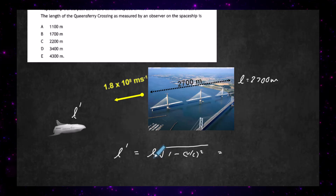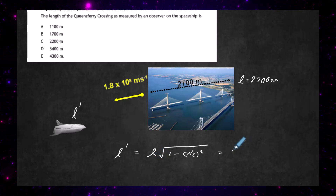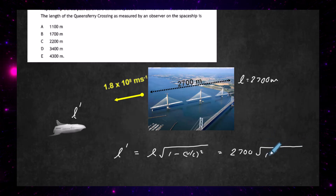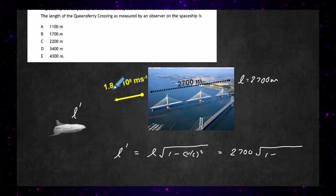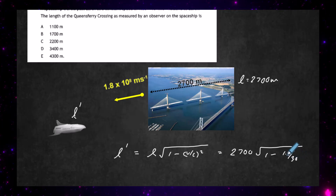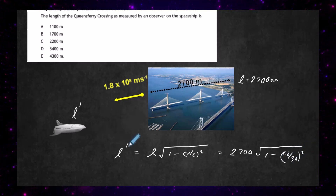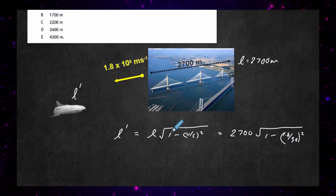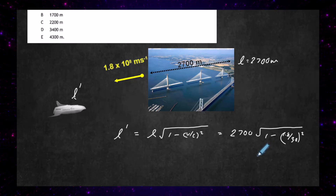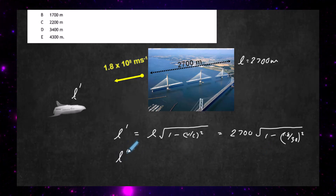That gives us the length of the bridge in the reference frame of the earth — 2700 — multiplied by the square root of 1 minus, and v here is 1.8 times 10 to the power 8 divided by c which is 3 times 10 to the power 8. So we can write 1.8 divided by 3.0 because the powers of 10 cancel, giving us 2700 times the square root of 1 minus 1.8 over 3.0 all squared.